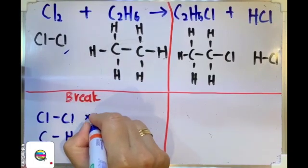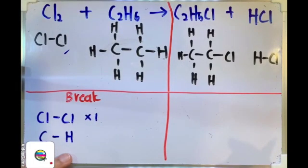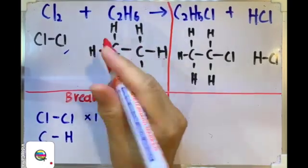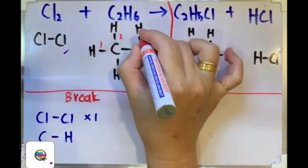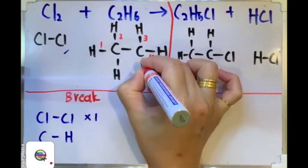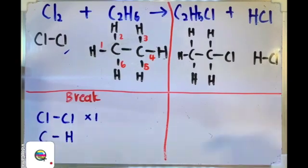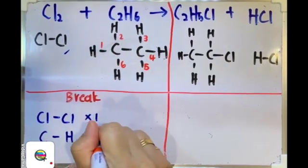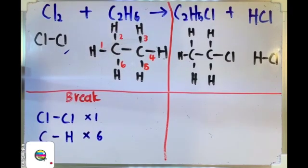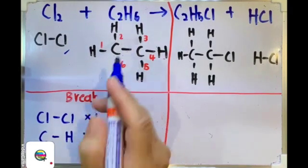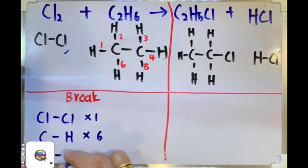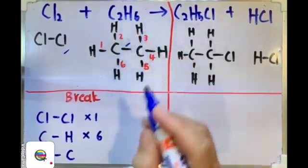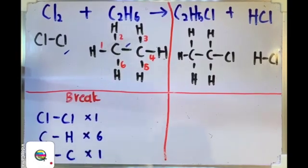For chlorine-chlorine, we have one. How many carbon-hydrogen covalent bonds can you observe from ethane? Let's count. We have number one, number two, three, four, five, and six. There are altogether six carbon-hydrogen single bonds. Lastly, observe this one. We have another carbon single bond carbon which is here, one of it. This is all the covalent bonds that we are going to break for our reactants.